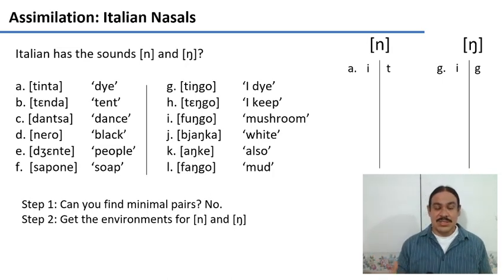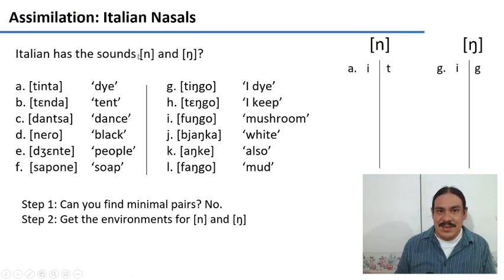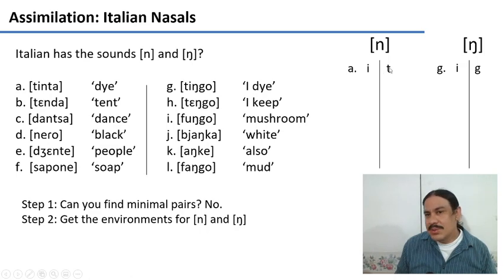The next thing we need to do is to study the environments where we find the alveolar n and the velar engma. So what we've been doing so far, we go through each of our words and try to figure out where we see an n. In example a, we see an n preceded by the sound e and followed by a t in tinta.